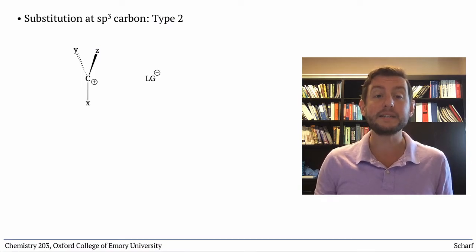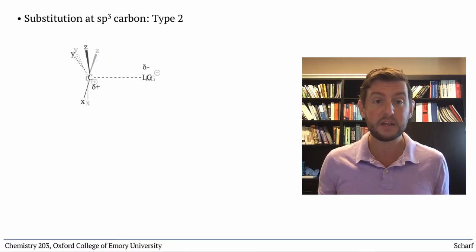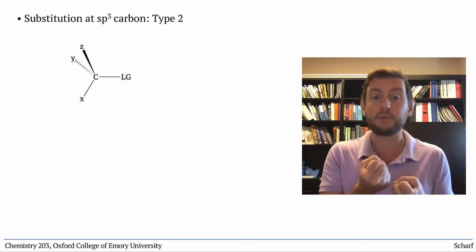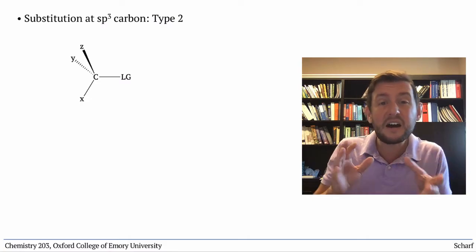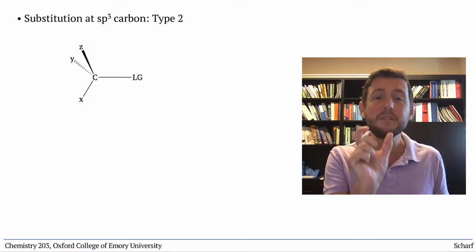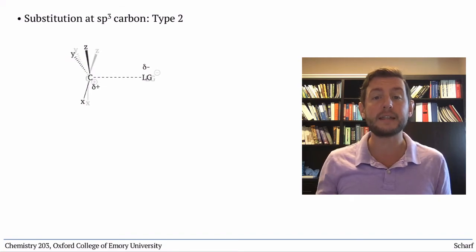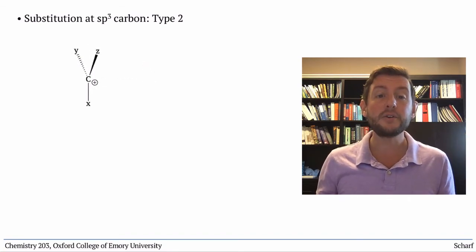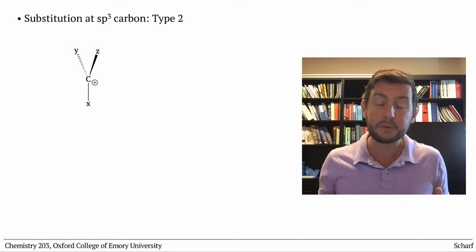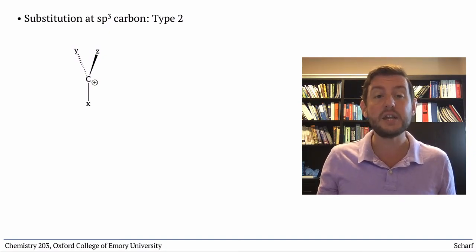If the carbocation is especially unstable, it can just bond back with the group that just left. But if the carbocation is stable enough to hang out for a brief moment long enough for that leaving group to depart entirely, another nucleophile, really anything with a lone pair, can come satiate that carbocation.